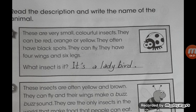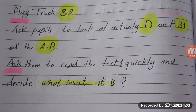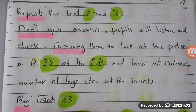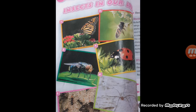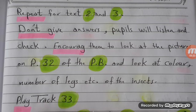Ask them to read text one quietly and decide what insect it is - ويقررون ما هي الحشرة. Repeat for text two and three. Don't give answers - pupils will listen and check their answers. Encourage them to look at the pictures on page 32 of the pupils' book, at the color and number of legs of the insects. Play track 33.